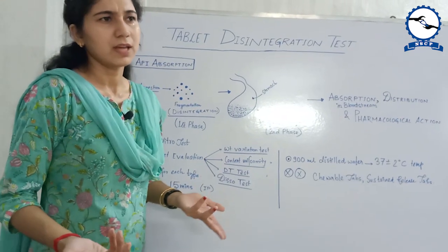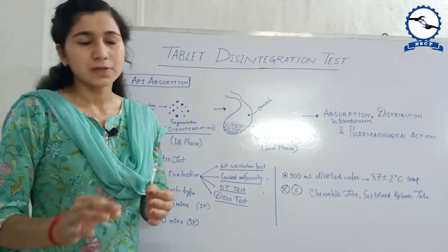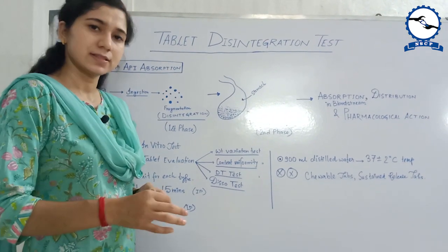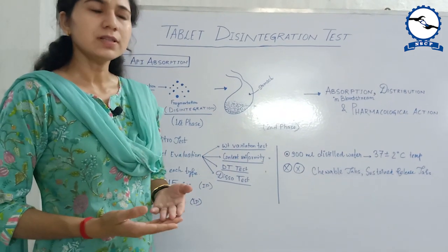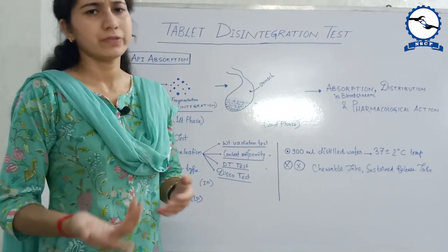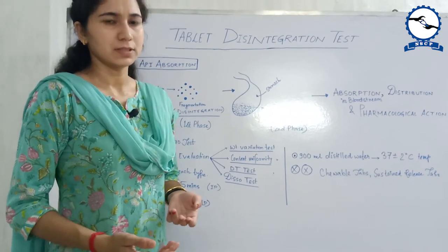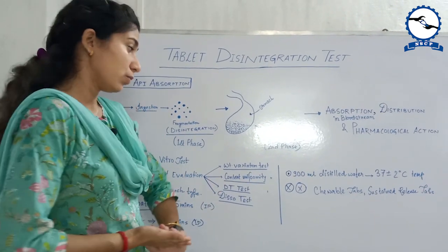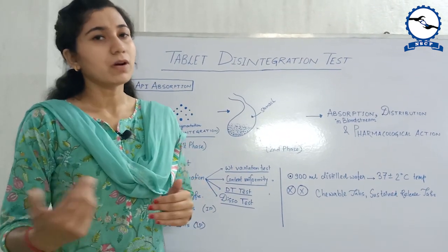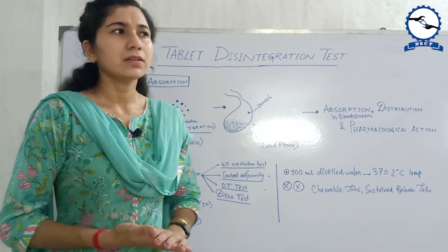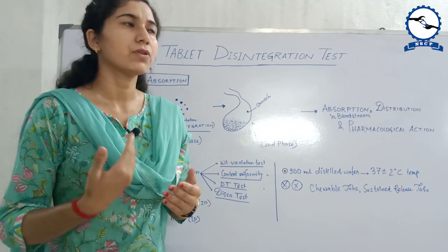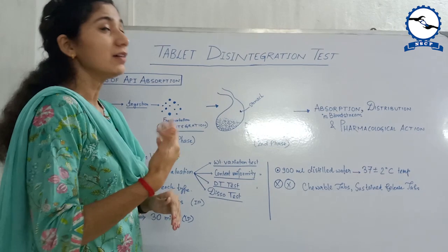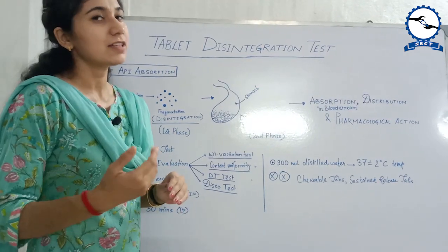Each tablet has a specific disintegration time — the coated tablet will obviously take more time and the uncoated tablet will take less time. In the IP, it is mentioned that the uncoated tablet generally takes about 15 minutes and the coated tablet generally takes about 30 minutes, but it increases for enteric coated and other types of coating. Also, this test cannot be done for chewable tablets or sustained release tablets. Now let us move on to the DT test apparatus and we will be seeing a small demo.